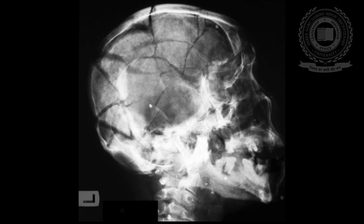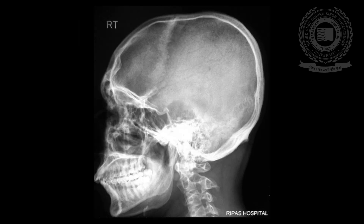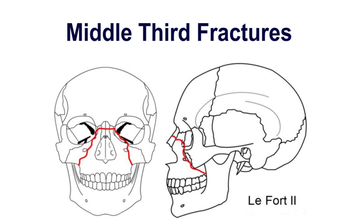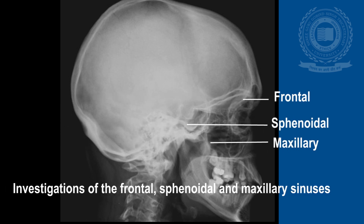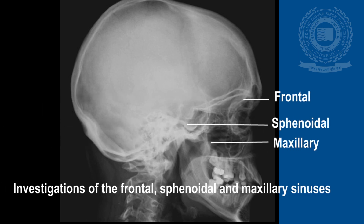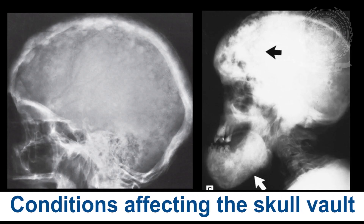This is another skull radiograph showing multiple fractures in the skull, and another picture showing depressed skull fracture. Another indication of the lateral skull radiograph is to show the downward and backward displacement of the maxilla, especially in middle third fractures. The lateral skull radiograph can also be used to investigate the paranasal sinuses including the frontal, sphenoidal, and maxillary sinuses. Multiple conditions which affect the skull vault can be diagnosed — this picture shows diffuse radio-opacities in the skull vault characterizing a cotton wool appearance as seen in Paget's disease.